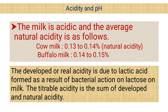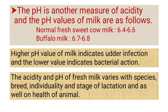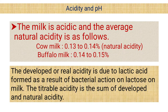The titratable acidity is the sum of developed and natural acidity. The pH values of milk are as follows: normal fresh sweet cow milk has pH 6.4 to 6.6, buffalo milk has pH 6.7 to 6.8. A higher pH value indicates udder infections, and a lower value indicates bacterial infections. The acidity and pH of fresh milk vary with the species, breed, individuality, stage of lactation, and the health of the animal.